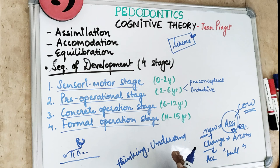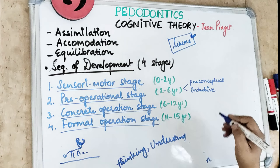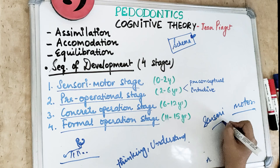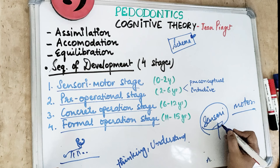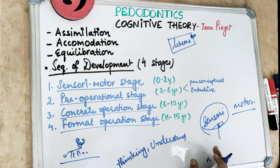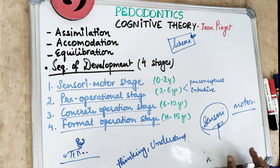The sensorimotor stage is from 0 to 2 years. Breaking down the term: sensory means sensation, and motor means action or movement. An infant learns from the five sensations — sight, hearing, touch, taste, and smell — and takes action in response to them. When a child hears their mom's voice or sees a moving toy, they respond and laugh. The end of this stage brings object permanence.